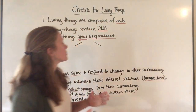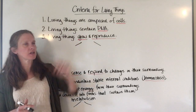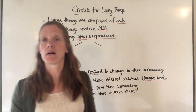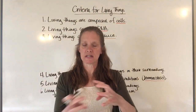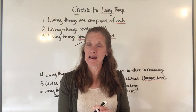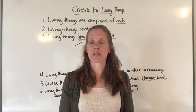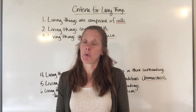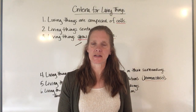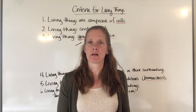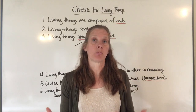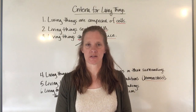The first criterion is that living things are composed of cells. The cell is the smallest component of something that is alive. A living thing may be composed of one cell—like bacteria—or many cells, like you and me, who are composed of many trillions of cells.